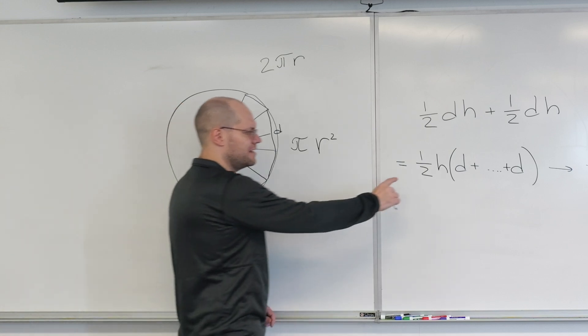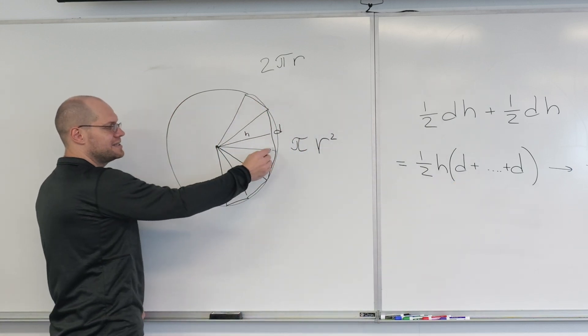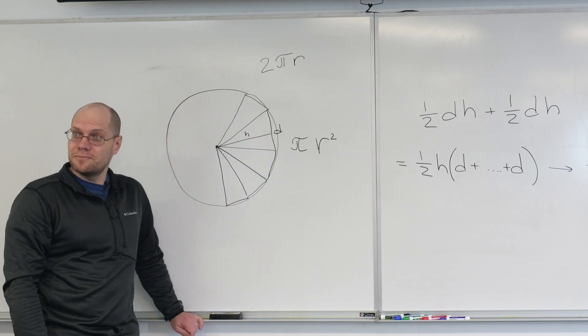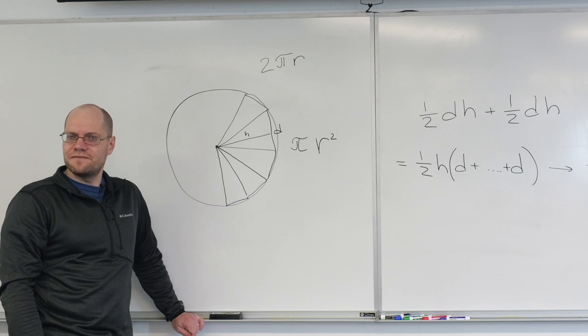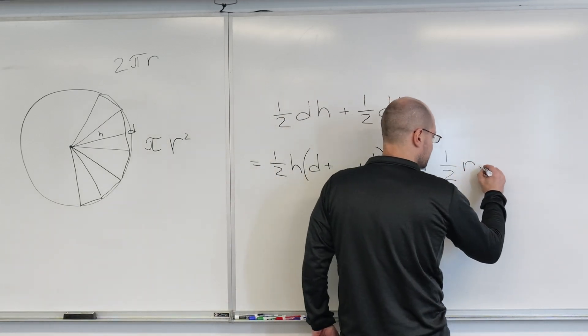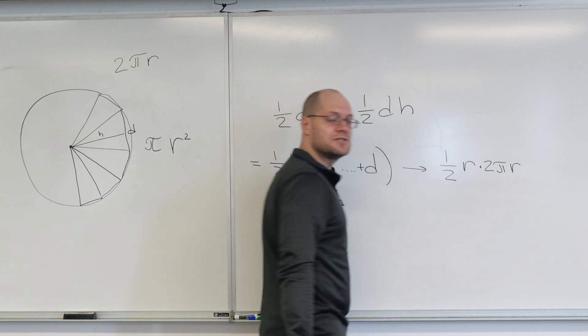And what's in parentheses, and that's why I wanted to group them this way, is getting to be closer and closer to the perimeter, to the length of the circumference. And so that becomes one half R times 2πR. And what's this product? πr².